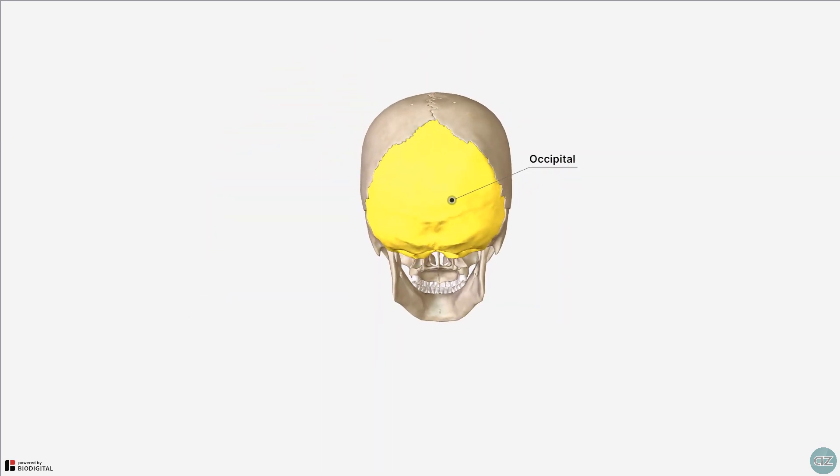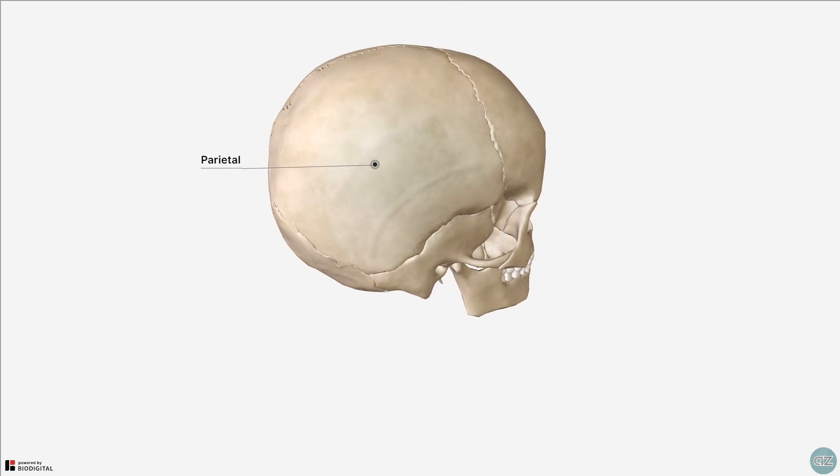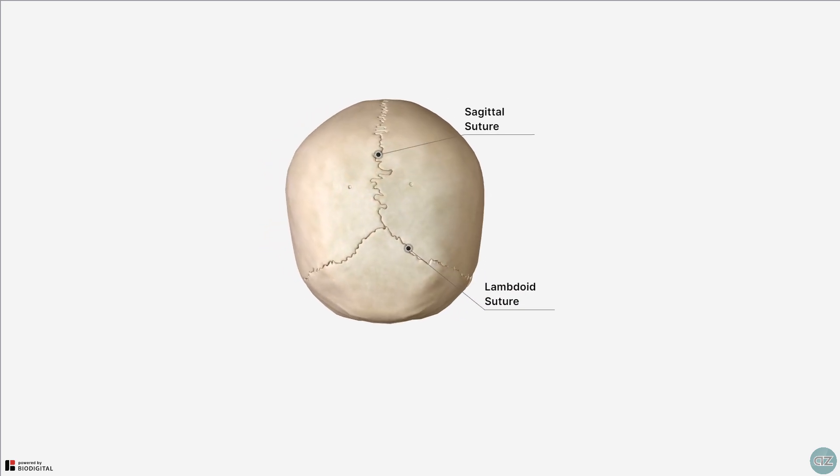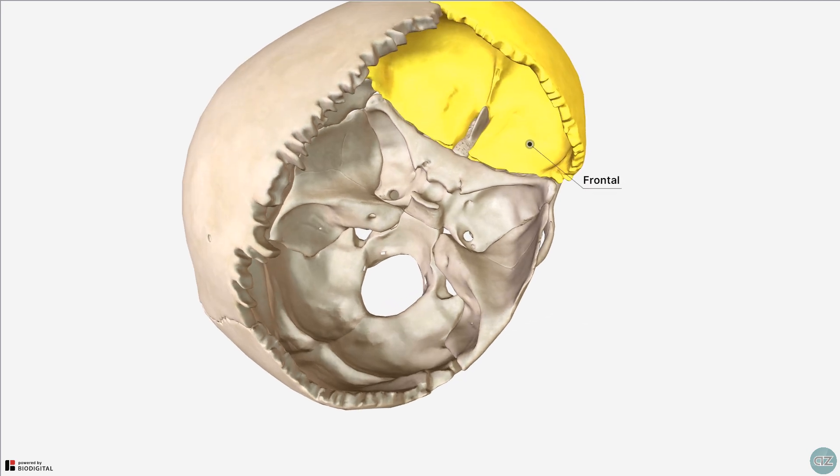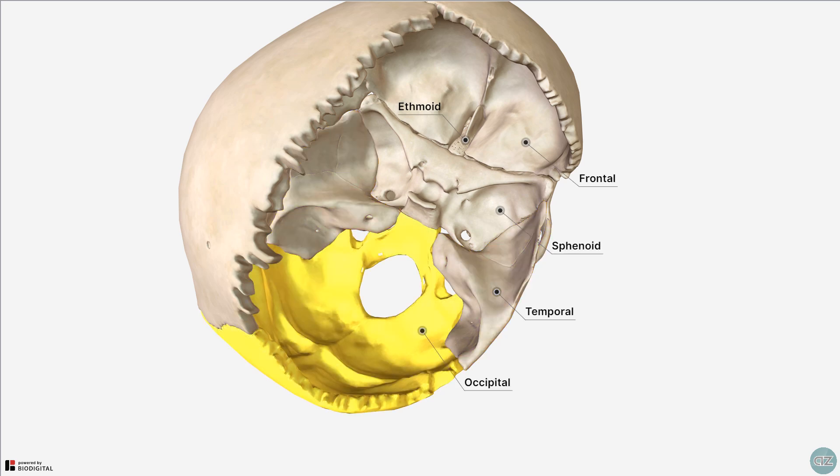As I mentioned previously, the neurocranium can be divided into the calvarium and the cranial base. The calvarium consists of the frontal, parietal, and occipital bones, which are joined together by fibrous sutures. The cranial base consists of the lower parts of the frontal bones, the sphenoid, the ethmoid, the temporal, and the lower parts of the occipital bones. Some of these bones of the cranial base have complex and intricate anatomy, which we will focus on in separate tutorials.